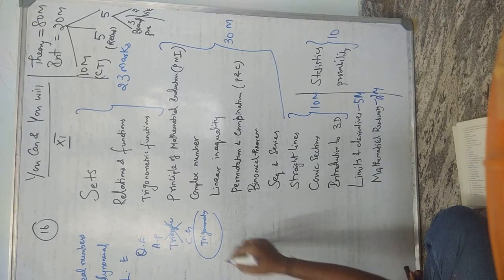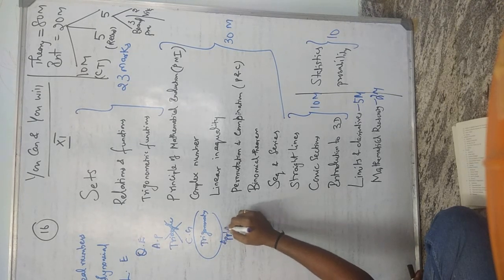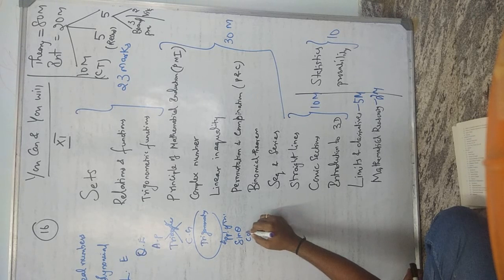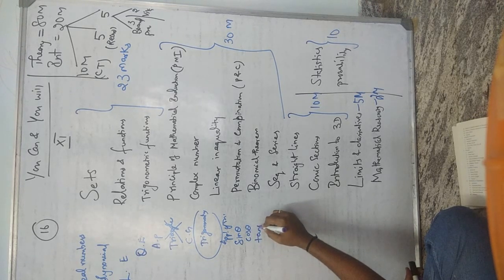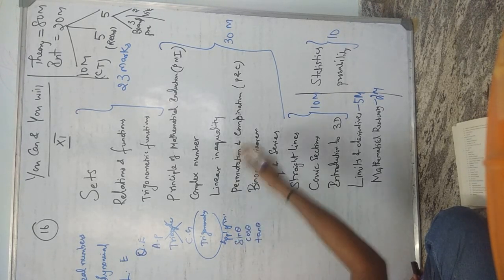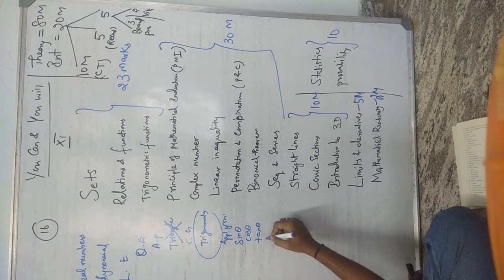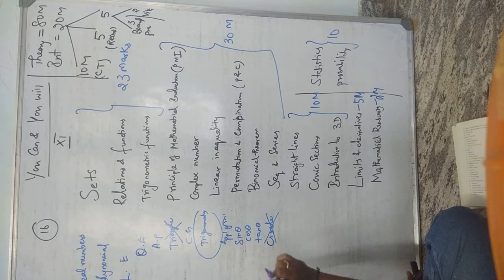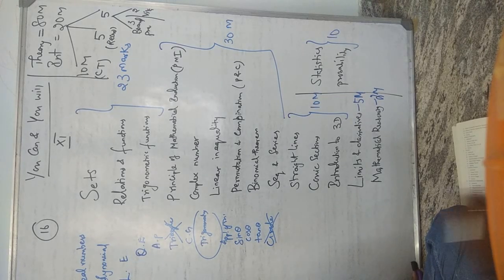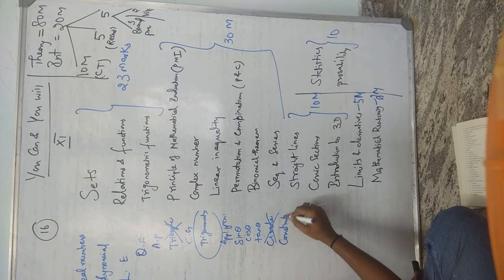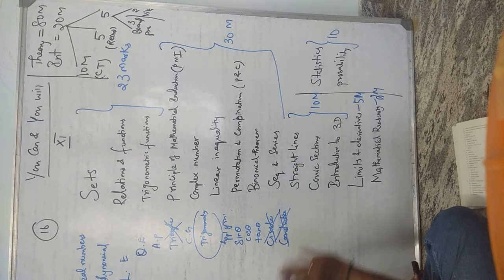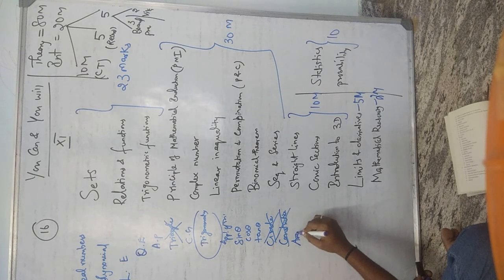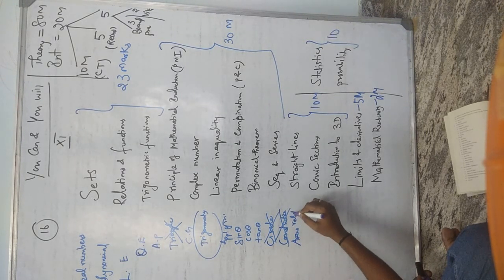The Application of Trigonometry chapter from Class 10 — the SOH-CAH-TOA ratios, sin θ = O/H, cos θ = A/H, tan θ = O/A — will be used in Class 11. For Circles, don't worry too much; only the concept of a tangent is relevant. Constructions from Class 10 will not be used in Class 11 or 12.